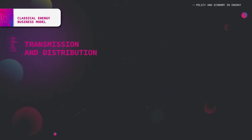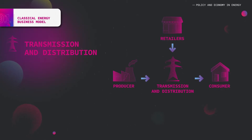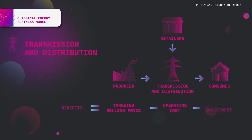When it comes to regulated actors like transmission and distribution operators, business models are slightly different. Transmission and distribution operators convey electricity from producer to consumer, and retailers pay them in proportion to the quantity of energy distributed. Prices are annually or quarterly defined by national regulatory authorities, which means that their benefits depend on their ability to control operation costs and investment.